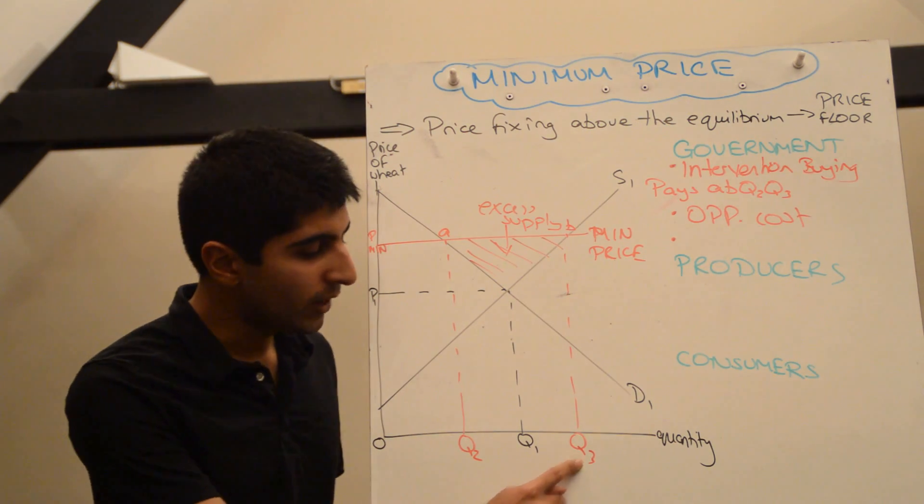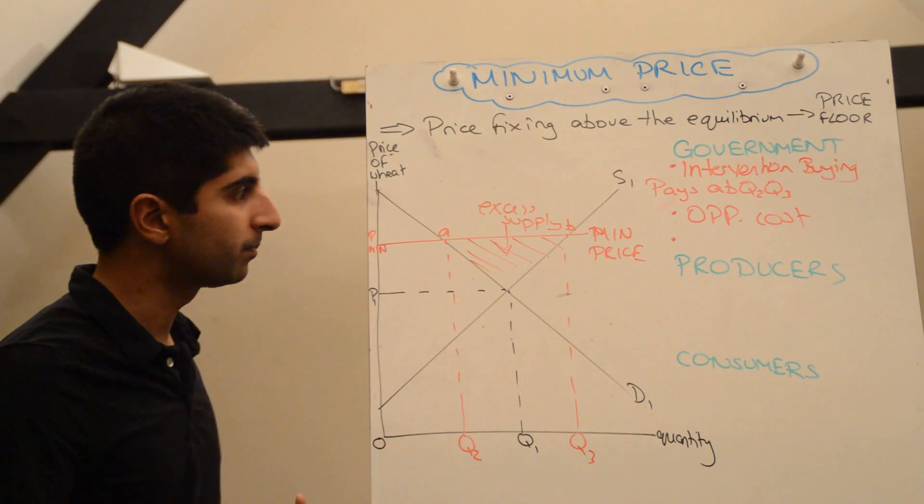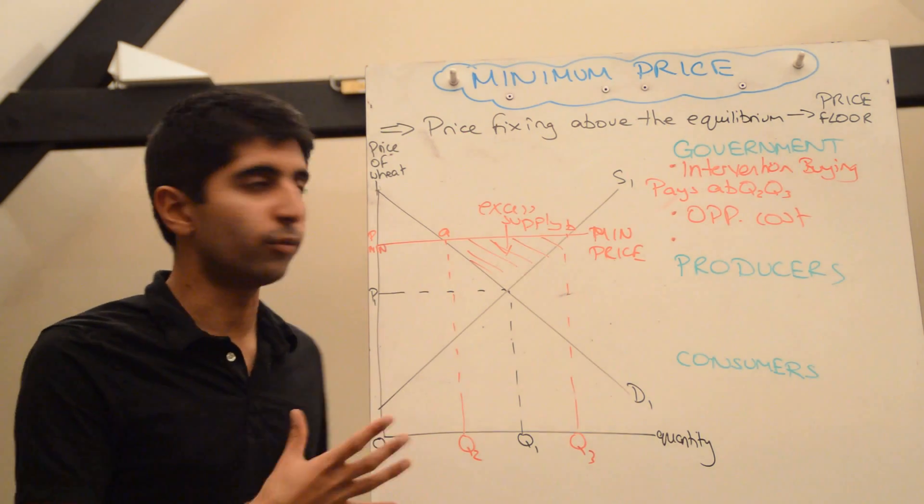So instead of producing Q3, they only actually end up producing what they're going to sell, which is Q2. An interesting idea. So that's one way they try and deal with excess supply in the real world.